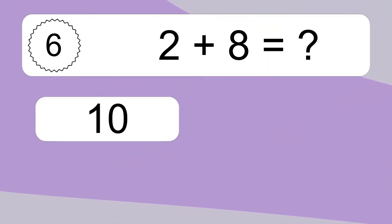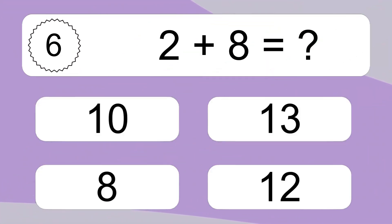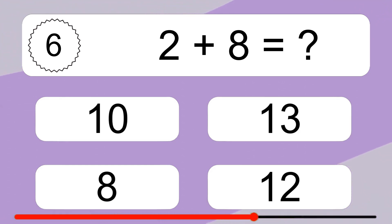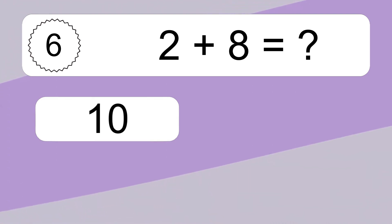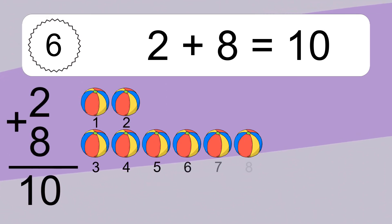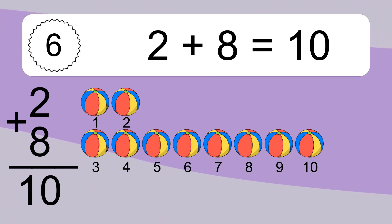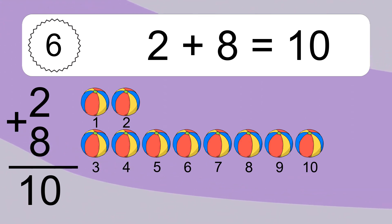2 plus 8 equals what? 2 plus 8 equals 10. Let's count it. 1, 2, 3, 4, 5, 6, 7, 8, 9, 10.